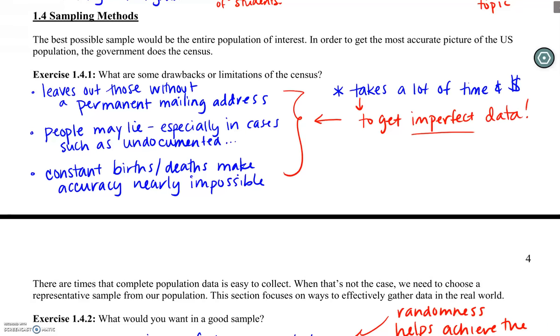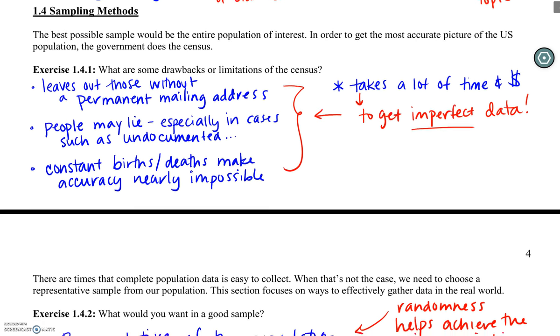So on Thursday, we talked about the need to take a sample of data, how even if we try to do a census, no matter what it's going to take a lot of time, cost a lot of money, and in a lot of cases, still give us potentially inaccurate data. So we need the ability to take a sample.